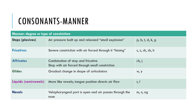Manner refers to the degree or type of constriction — how air changes within the vocal tract. Stops or plosives involve a buildup of pressure released in a small explosion. Putting your hand in front of your lips and saying 'p' or 'b,' you feel a little puff of air. Fricatives, like 's,' 'z,' or 'sh,' produce a continuous flow of air — a hissing sound. You can feel that continuous flow with your hand in front of your lips.